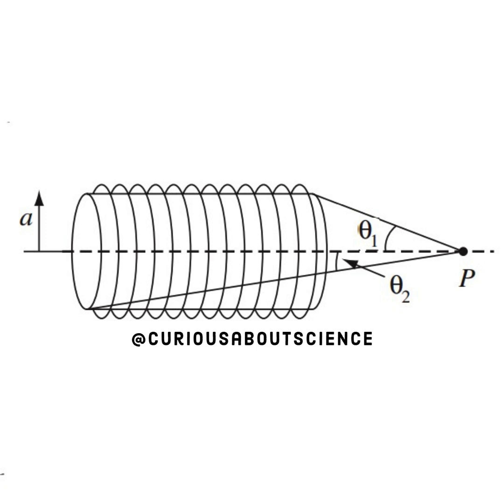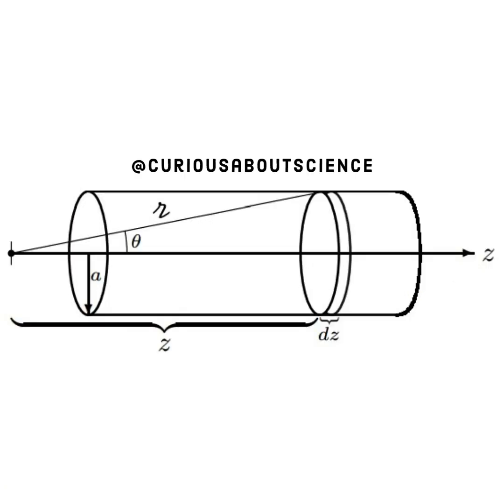Before we get into any of the notes, let's look at the diagram. We have some point P here to the right where theta 1 and theta 2 are descriptive of what's going on at the top and bottom below the axis that splits the solenoid in the cylindrical shell at radius A. So let's go ahead and dive in.